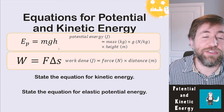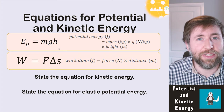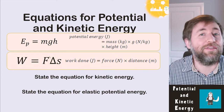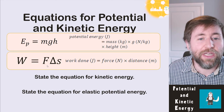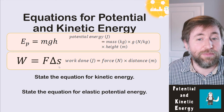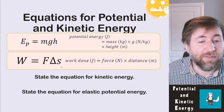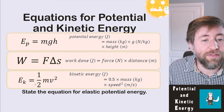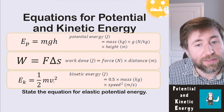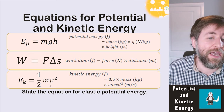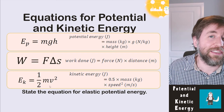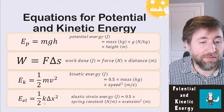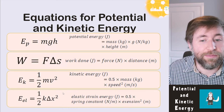Work done is not a store of energy — it's a way of moving energy between stores: force times distance moved. The equation for kinetic energy is one-half times mass times speed squared. The equation for elastic potential energy is one-half times the spring constant times extension squared.